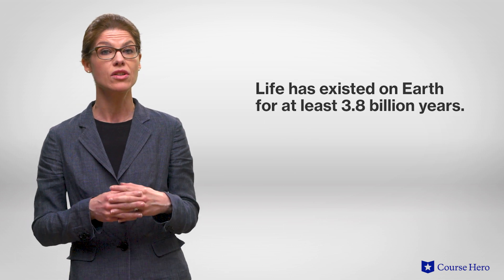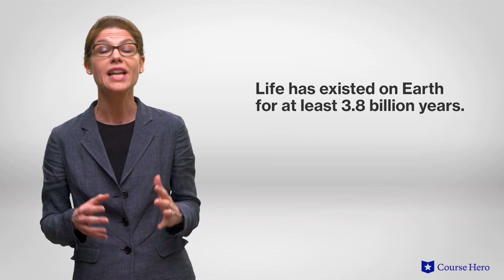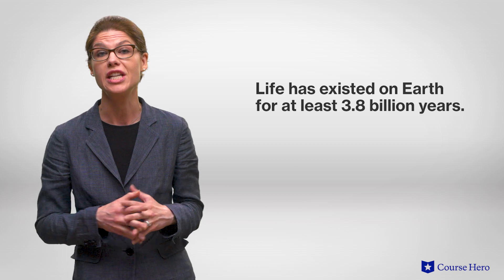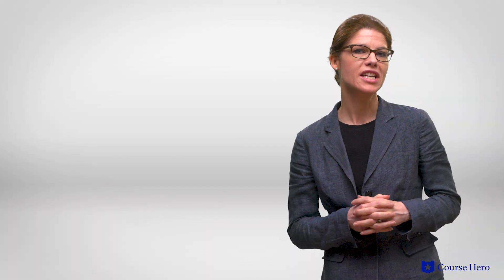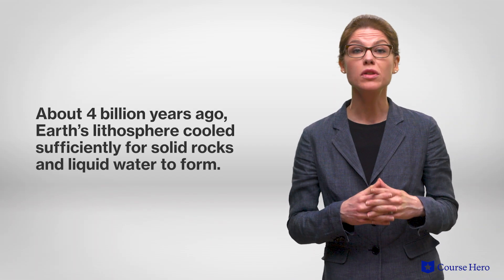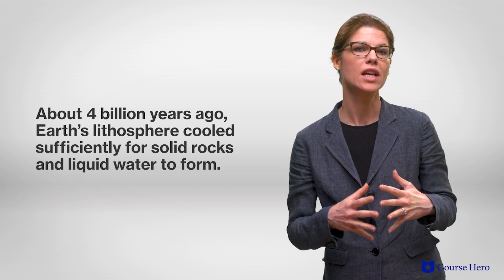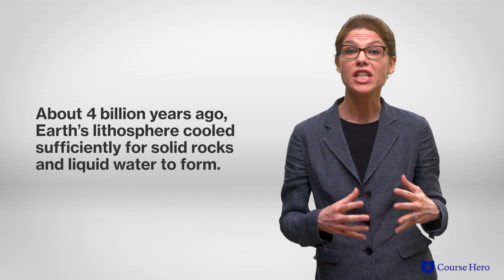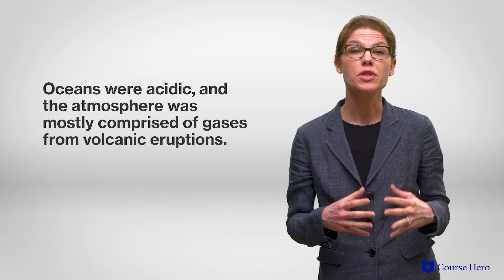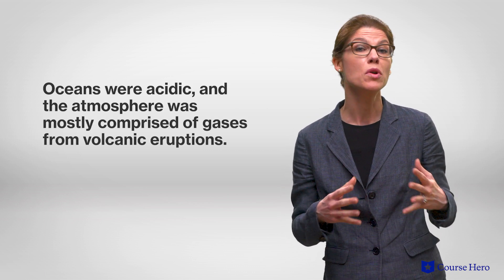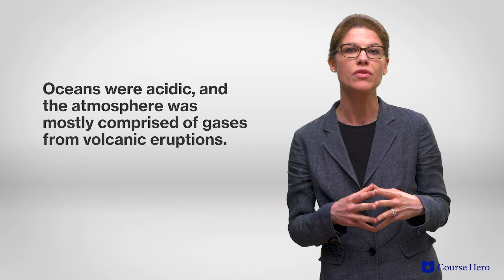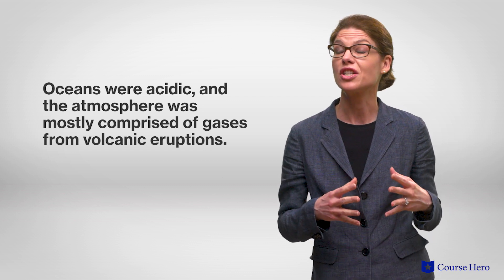Scientists have used fossil evidence to estimate that life has existed on Earth for at least 3.8 billion years. About 4 billion years ago, Earth's lithosphere cooled sufficiently for solid rocks and liquid water to form. Conditions on our planet were nothing like they are today. The first oceans were acidic, and the atmosphere was mostly comprised of gases spewed from erupting volcanoes, such as carbon dioxide, sulfur dioxide, and hydrogen sulfide.